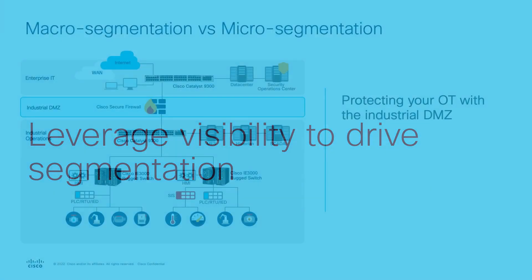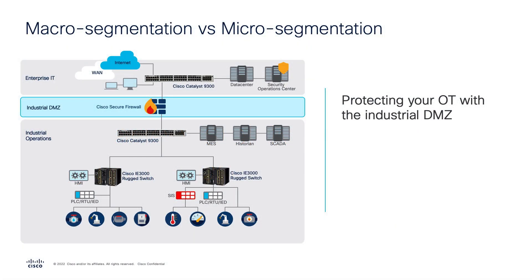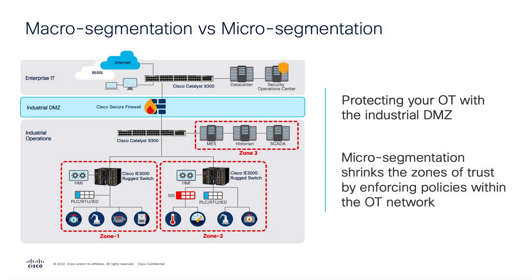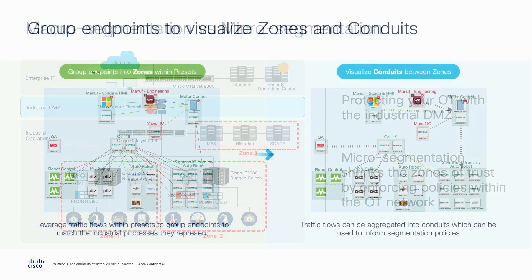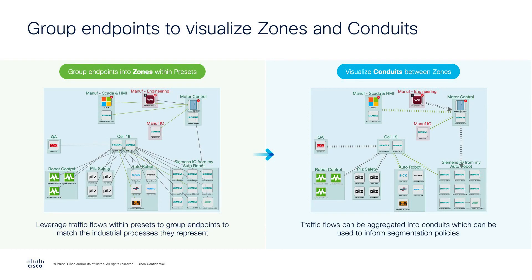When discussing security in industrial environments, most organizations will start with the deployment of an industrial DMZ — macro segmentation to isolate the IT organization from the operational organization and protect them from each other. However, this is really just a starting point. The next phase is micro-segmentation to reduce the number of devices that could be impacted by a breach, as well as the ability to quickly contain devices should they be compromised. Prior to defining policies, CyberVision enables organizations to understand what devices are deployed, what communications are occurring, and which policies can be most effective.